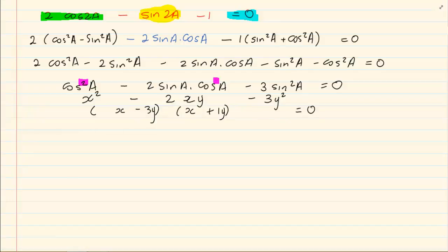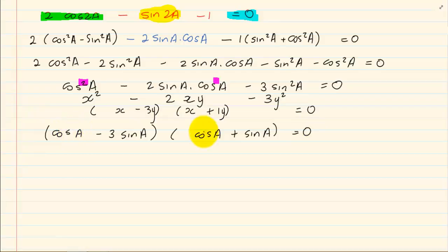Going back to our ratios, we have (cos a minus 3 sin a) and (cos a plus sin a). If you are doubtful you can double check by expanding: cos times cos gives cos squared a, minus 3 sin a times positive sin a gives minus 3 sin squared a. The cross terms: minus 3 sin a cos a plus sin a cos a gives minus 2 sin a cos a. This confirms the factorization.